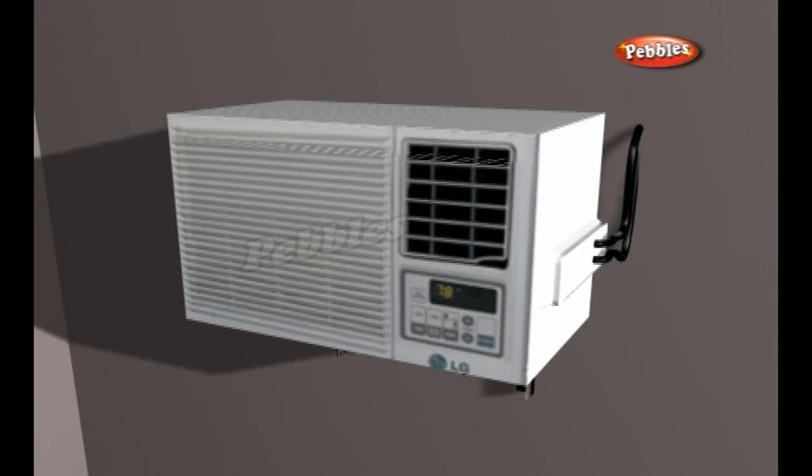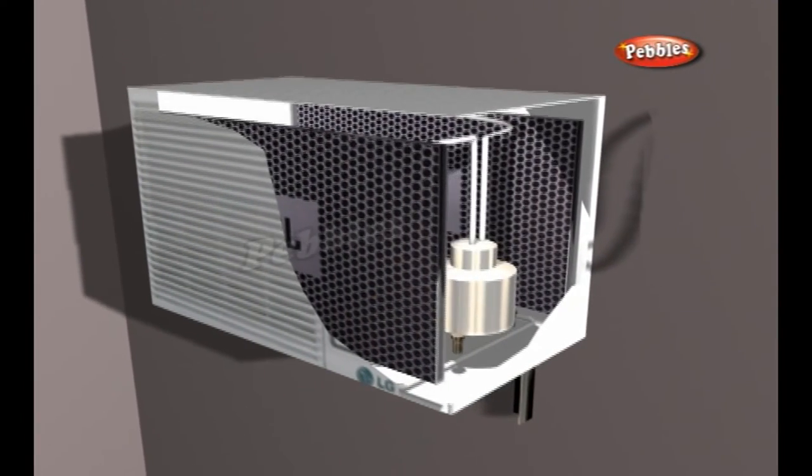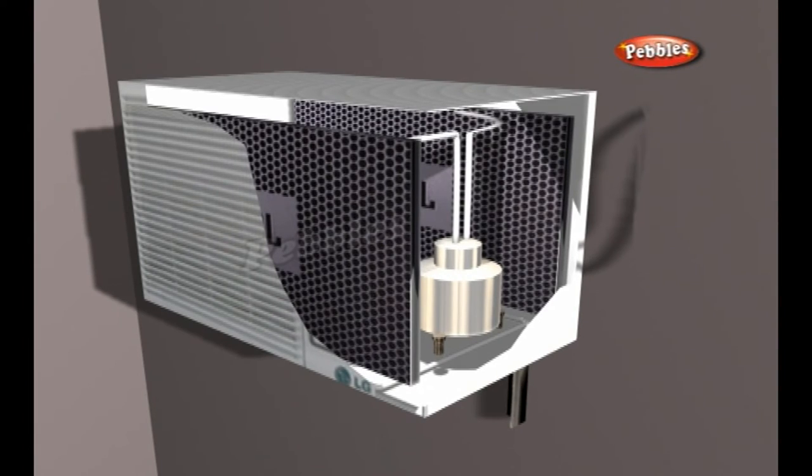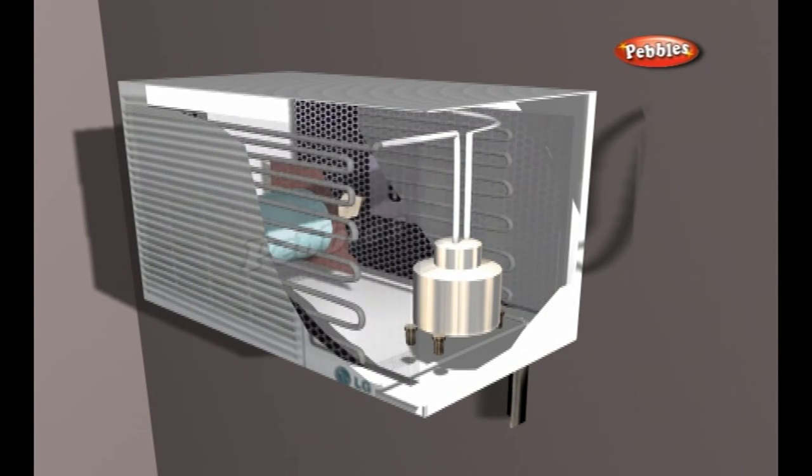The basic components are a compressor, evaporator coil, refrigerant-filled tubing, and condenser coil. When the unit is running, the circulating fan and compressor are running simultaneously. The fan motor has two fan blades attached to it on either end.